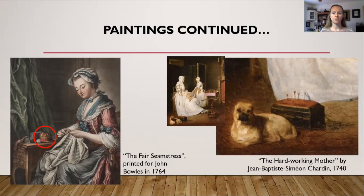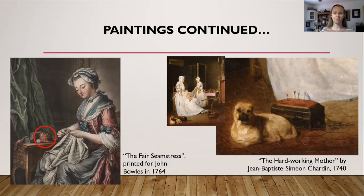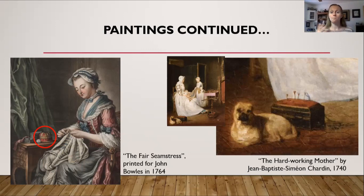Before the industrial revolution, pins were expensive because they took time to make and were very easy to lose — just think of how small a typical pin is. Depending on what you needed them for, pins came in different sizes. They were used for everything in women's fashion: large pins held up your farthingale, smaller ones held up sleeves, and if you were wearing a partlet — a piece in Tudor fashion covering a square neckline — you would have a pin closing it at the front.